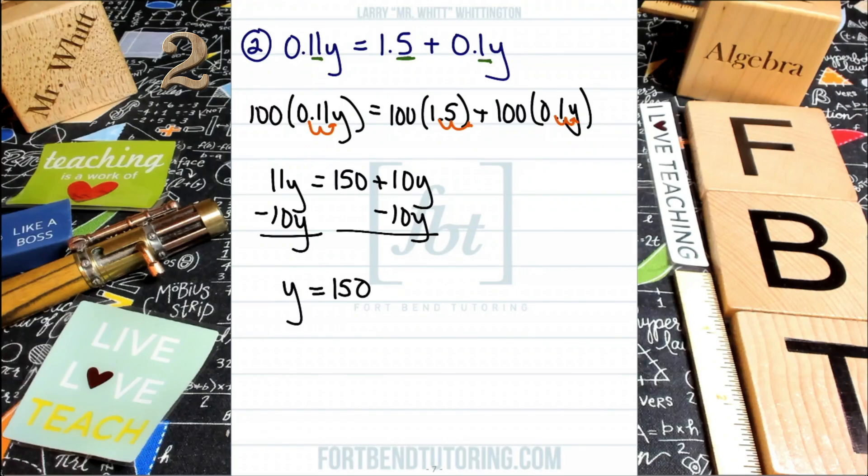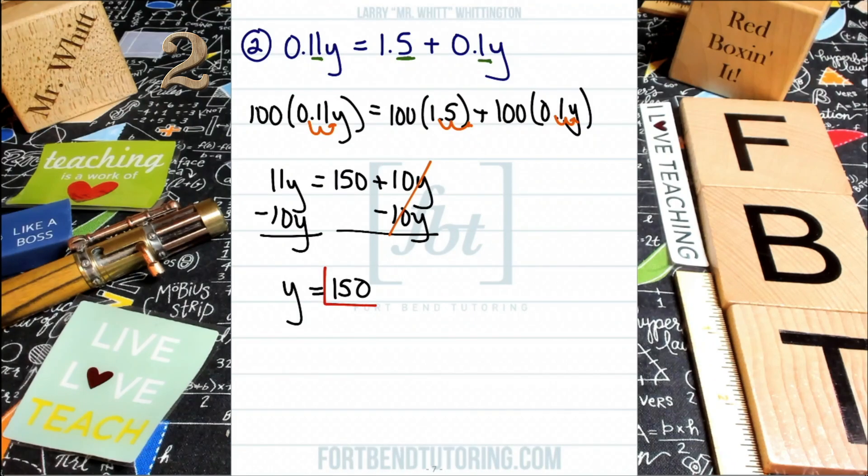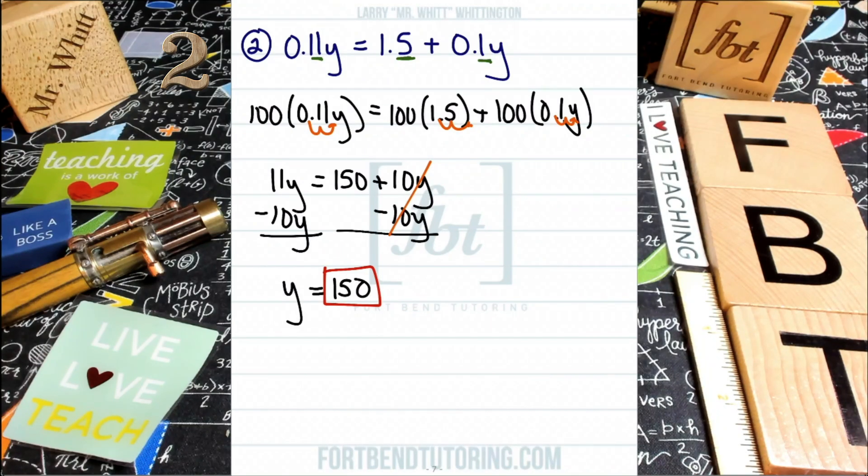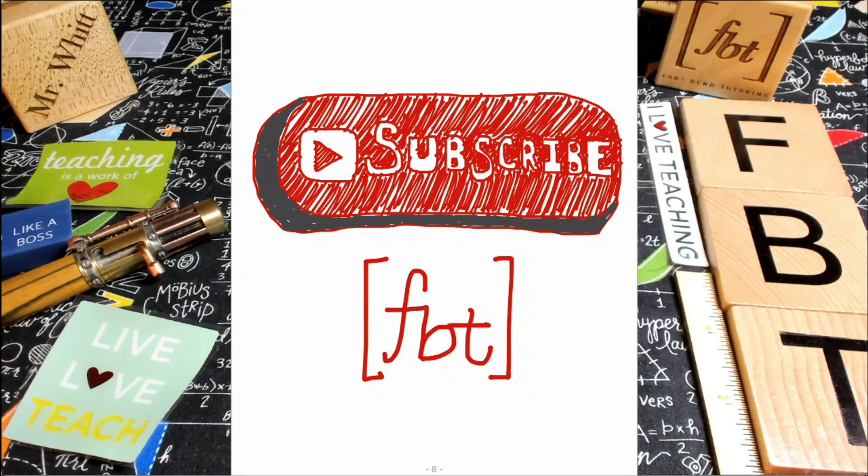And then on the right side, you'll be bringing down the 150. And what happens with your additive inverses, your opposites, the 10Y, the negative 10Y. What is that? They cancel out to zero. So let's just cancel those out there. What's the next thing I'm going to do? Does anybody remember? That's right. I'm going to red box it people. And that completes our second problem of this video and concludes the video itself.